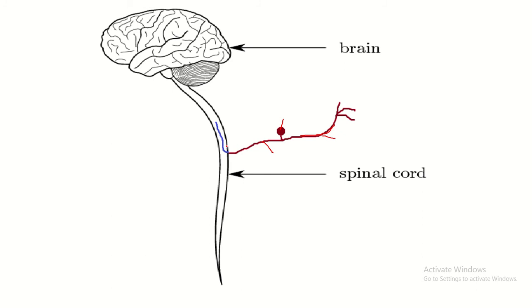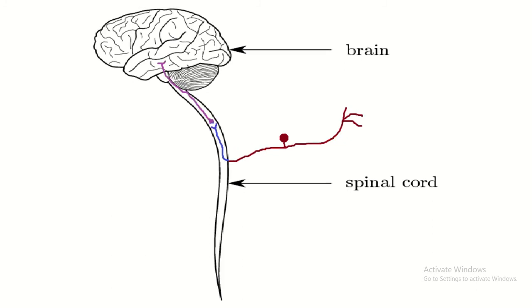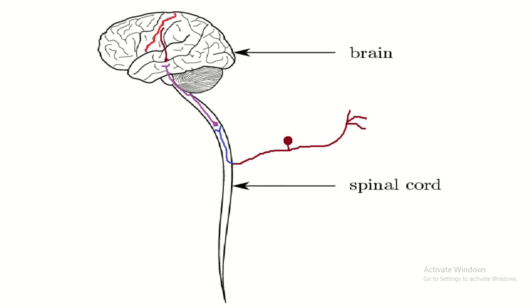The axon of the central process synapses with the second-order neuron. The axon of the second-order neuron synapses with the third-order neuron. The axon of the third-order neuron terminates into the sensory cortex.